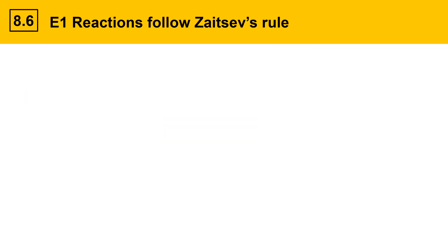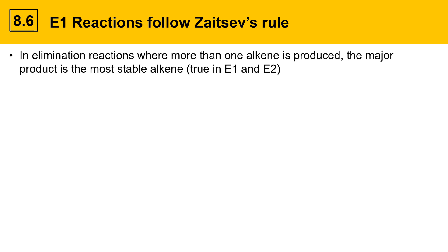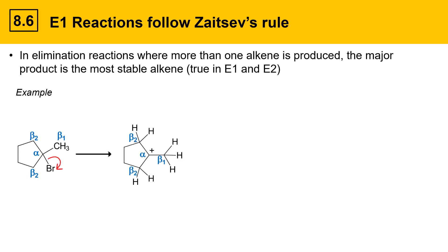The next feature of E1 reactions is that they follow Zaitsev's rule. This was introduced with E2 mechanisms but also holds for E1. In elimination reactions where more than one alkene is produced, the major product is the most stable alkene. Here's an example with a tertiary alkyl bromide. This substrate has an alpha position where the leaving group is attached, a beta 1 position at the methyl group, and two identical beta 2 positions. The first step is the leaving group leaving to give a carbocation with the alpha and beta positions shown.